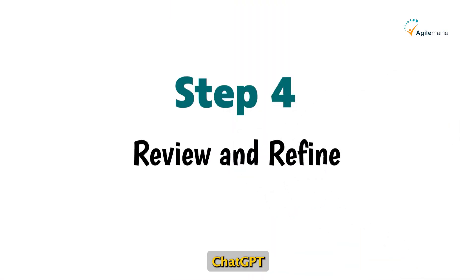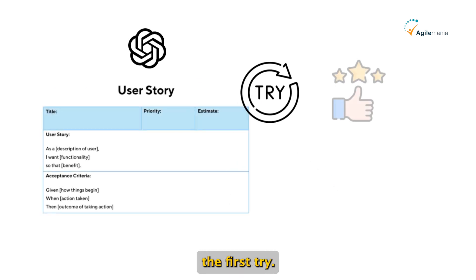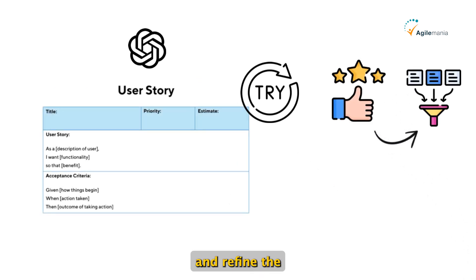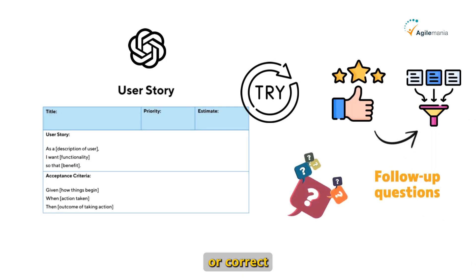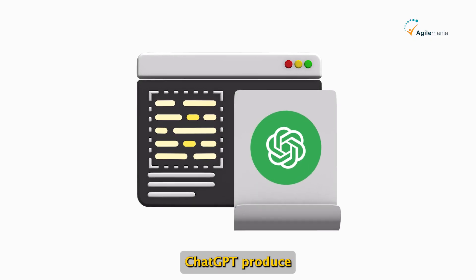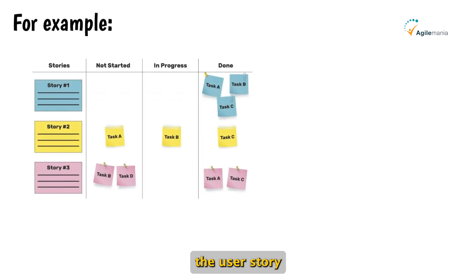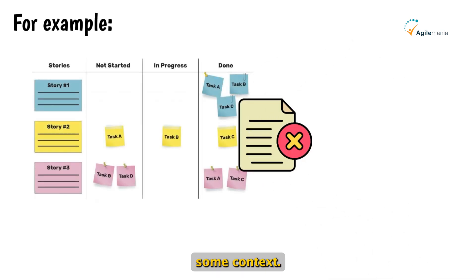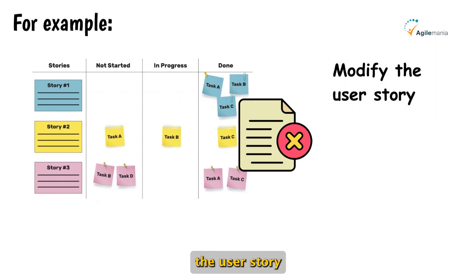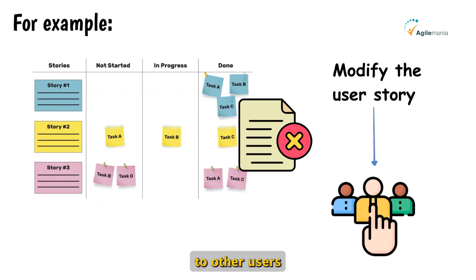The next step is to review and refine. ChatGPT may not get the user story right on the first try. Review its response and refine the original prompt if needed. Ask follow-up questions to fill in any missing details or correct any issues. Refining your prompts will help ChatGPT produce better results over time. For example: 'The user story looks good but is missing some context. The product already allows task assignment. Modify the user story so it focuses on enabling a user to assign tasks to other users in the system.'